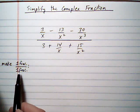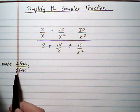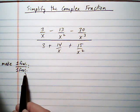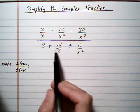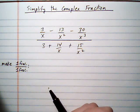One is to turn the problem into one fraction on top divided by one fraction on the bottom. And then the other way you could do it is multiply every term by the LCD of the entire complex fraction.